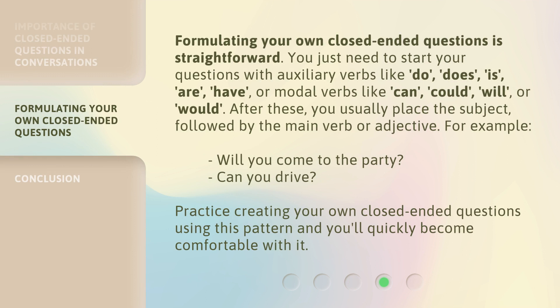Formulating your own closed-ended questions is straightforward. You just need to start your questions with auxiliary verbs like do, does, is, are, have, or modal verbs like can, could, will, or would. After these, you usually place the subject, followed by the main verb or adjective. For example: Will you come to the party? Can you drive? Practice creating your own closed-ended questions using this pattern and you'll quickly become comfortable with it.